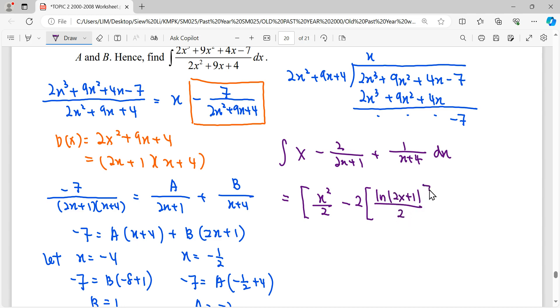We can get ln 2x plus 1, then divide back the coefficient of the x is 2 and this can be simplified. Then again integrate 1 over linear so we get ln x plus 4 over the coefficient of the x which is 1, then plus C.